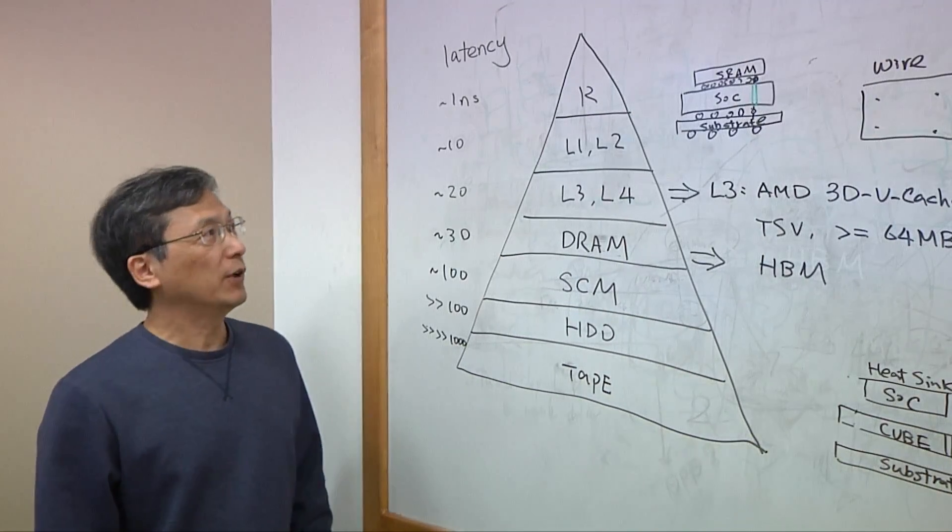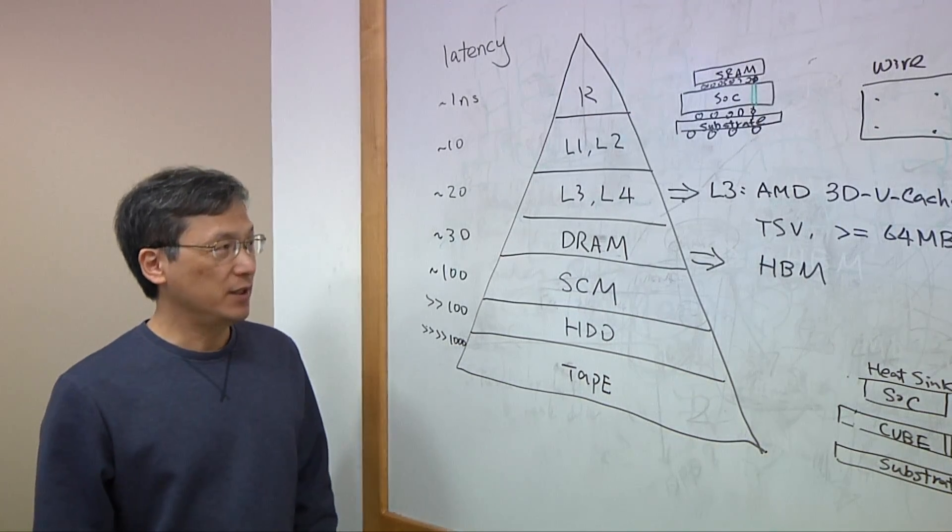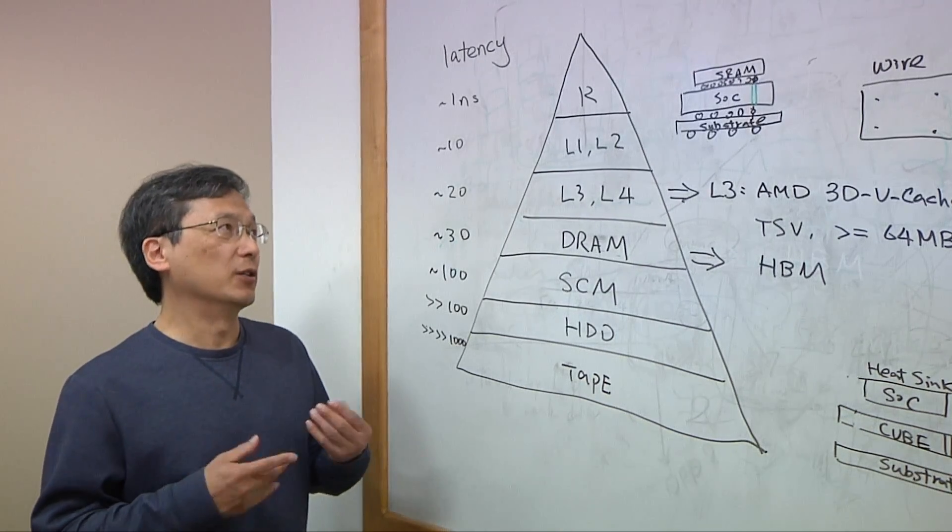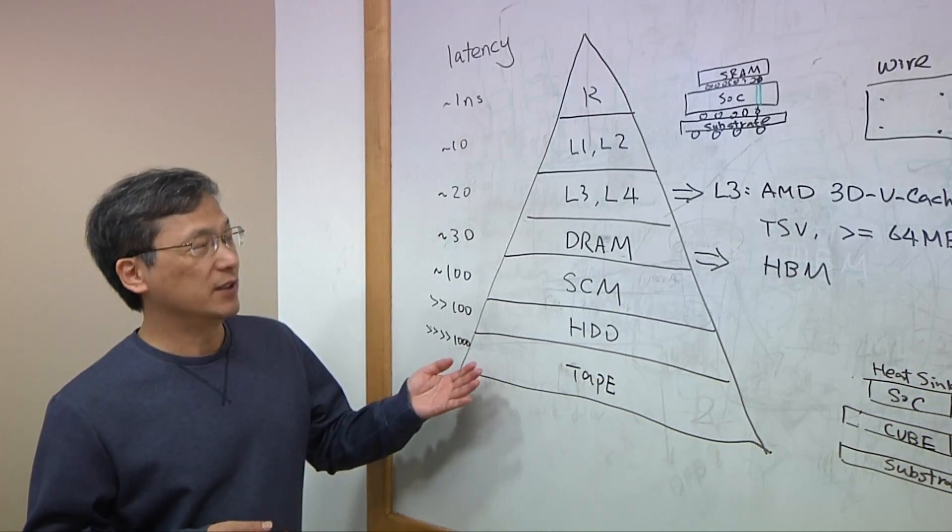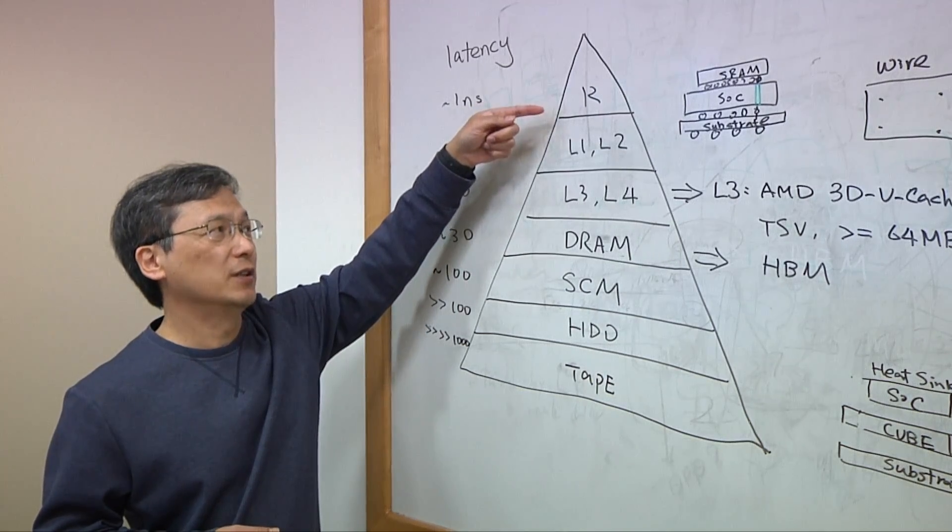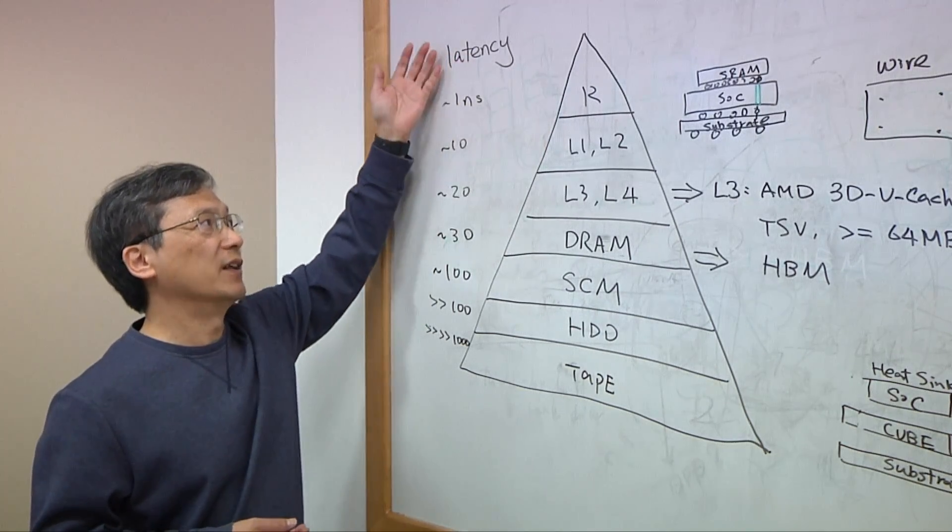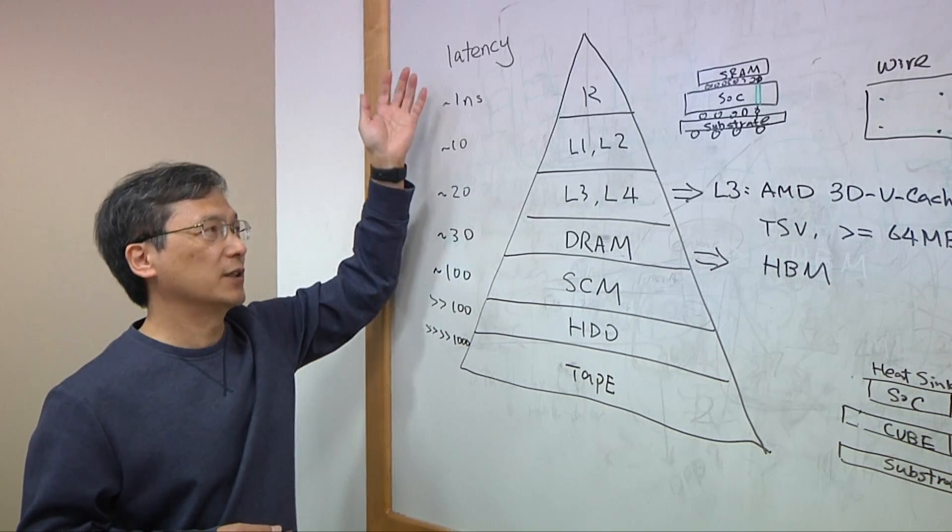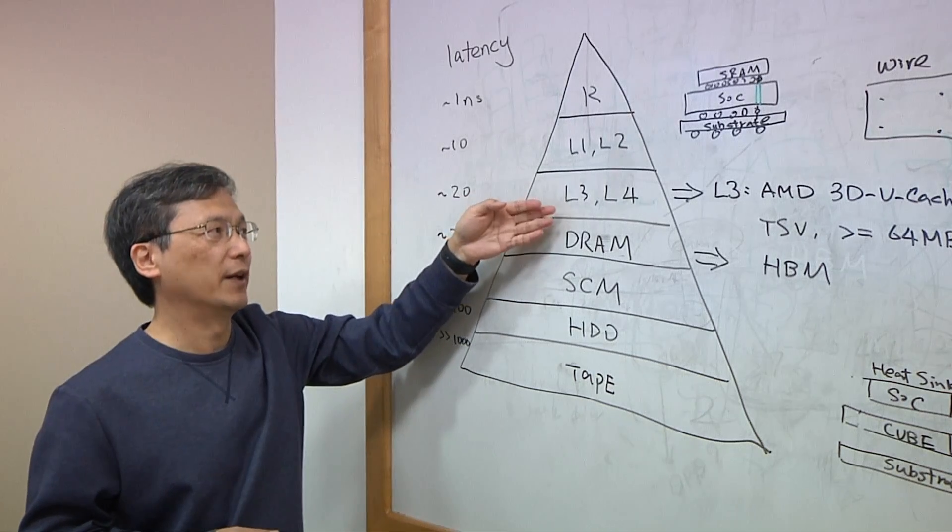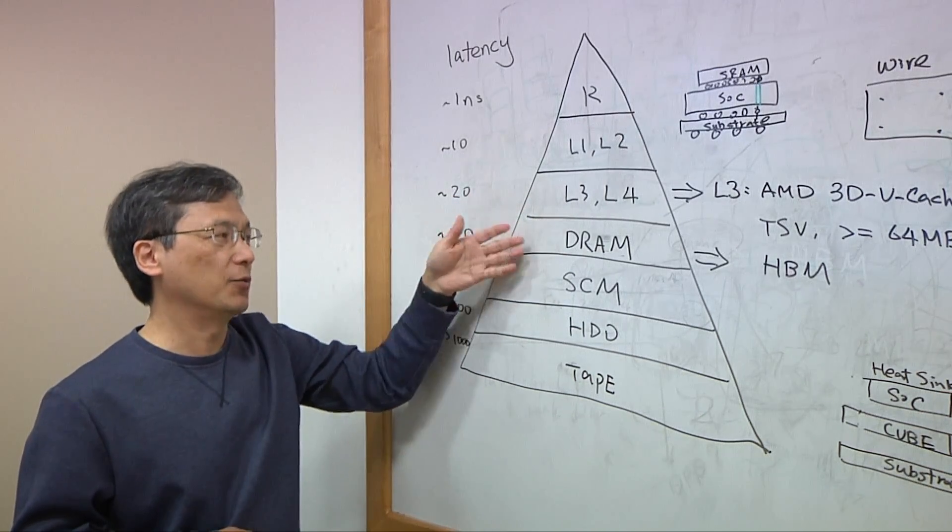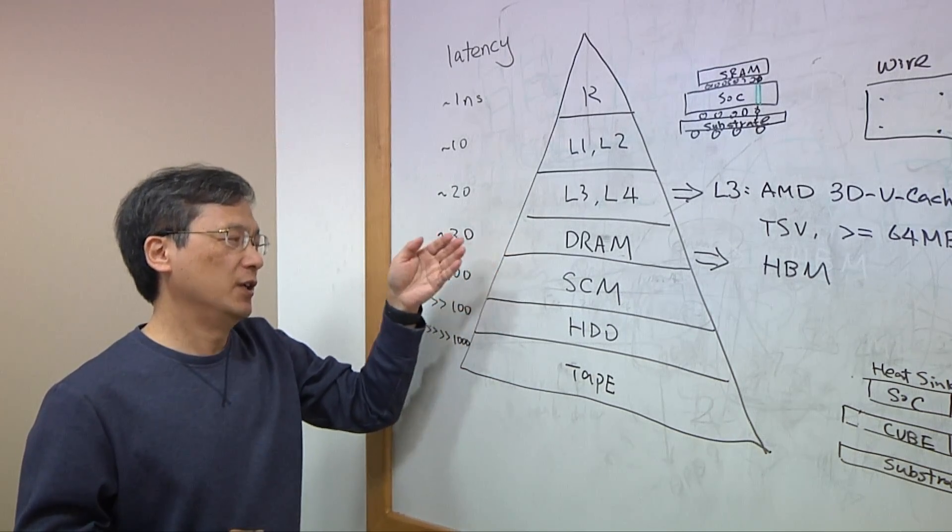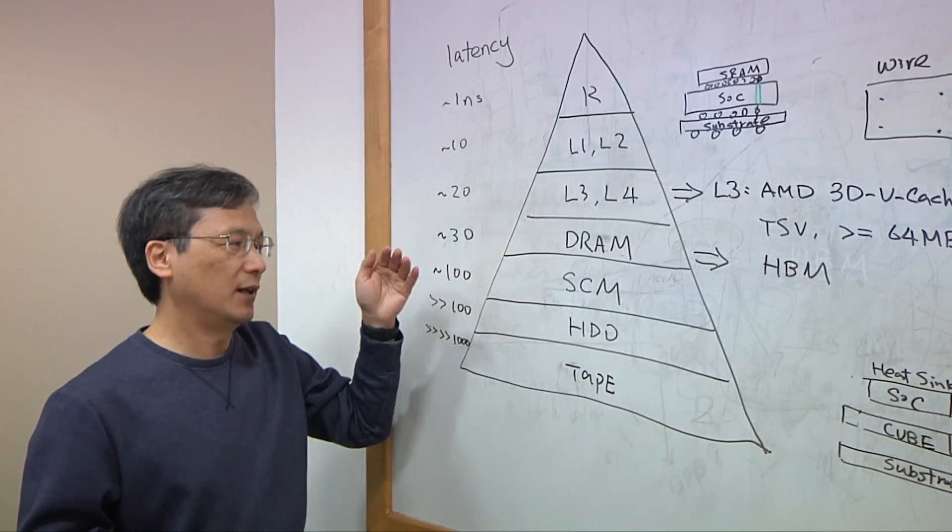We are looking at the memory hierarchies. Basically, that's a way to tell what kind of requirements and how to serve the purpose. When you look at this pyramid architecture, from the top you can see the registers with different latency. For example, register with probably around one nanosecond, followed by level one cache and level two cache, which are about 10, followed by level three, level four. And then there's DRAM, which is the main memory that we have seen in the market today. And next would be the storage class memories, followed by hard disk and tape.